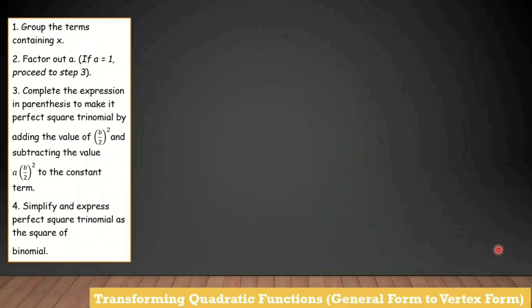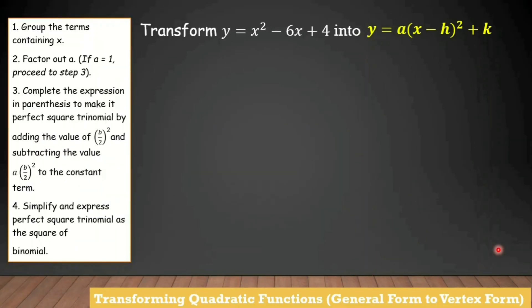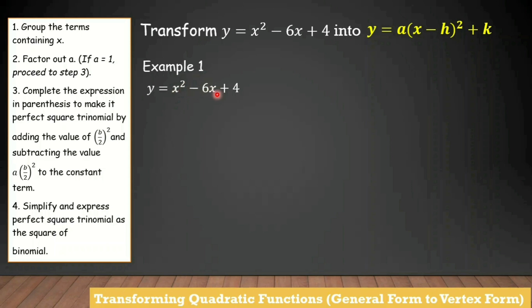Let's have our first example. Transform y equals x squared minus 6x plus 4 into y equals a times quantity x minus h squared plus k. This one is the quadratic term, linear term, and constant term. The value of a here is 1, b is negative 6, and our constant term is positive 4. Let's start transforming this equation into vertex form.